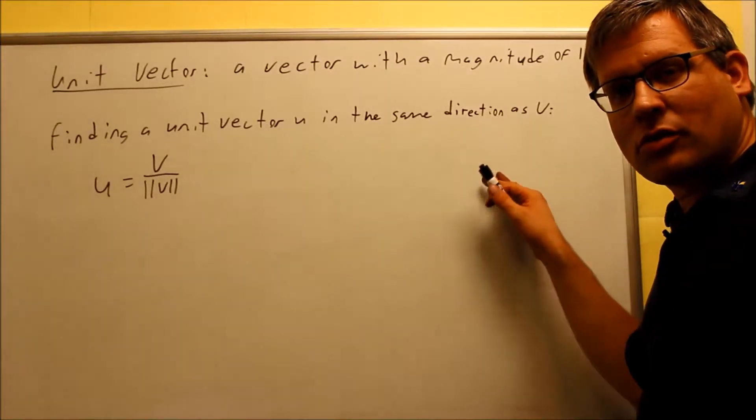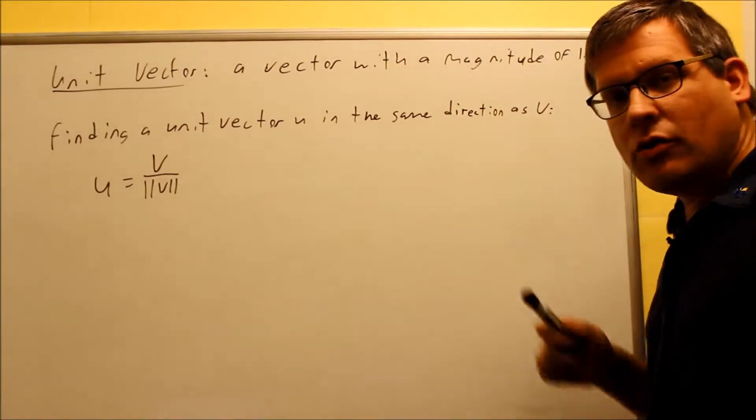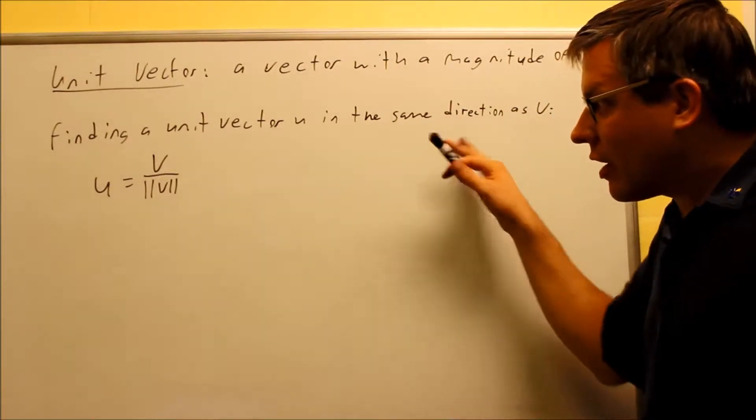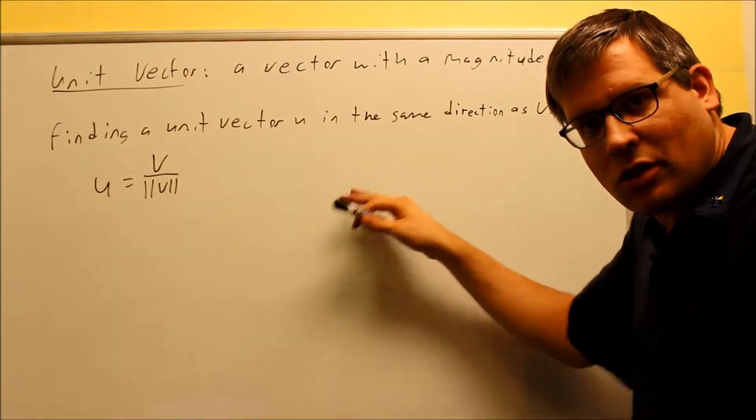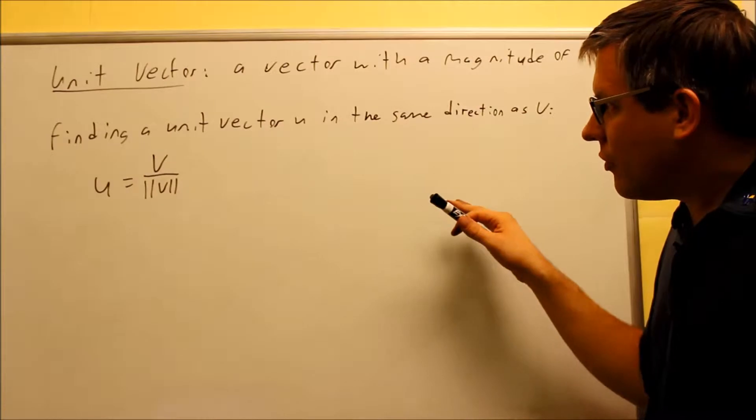Okay, next concept in this section, we're talking about unit vector. A unit vector is a vector with a magnitude of 1. These have applications in navigation. We're not going to get into the exact application of it here, but this is basically just giving you a foundation of the formula itself.